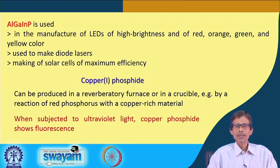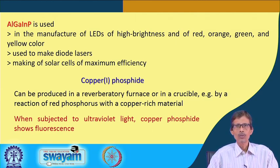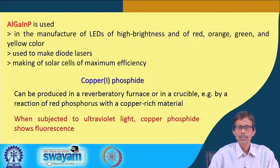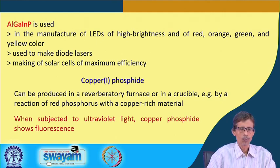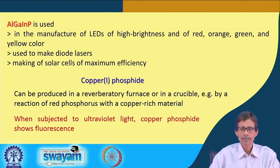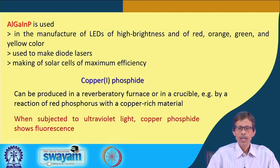One more example is copper phosphide, in the cuprous form. The P³⁻ ion, having a huge charge, is highly reducing, so it is not possible to stabilize the cationic counterpart in the cupric state. It would be easier to preserve it in the reduced form — the cuprous form, copper(I) phosphide. It can be produced in a reverberatory furnace or in a crucible, since the crucible can withstand very high-temperature reactions.